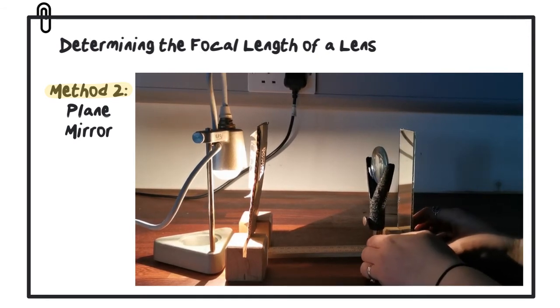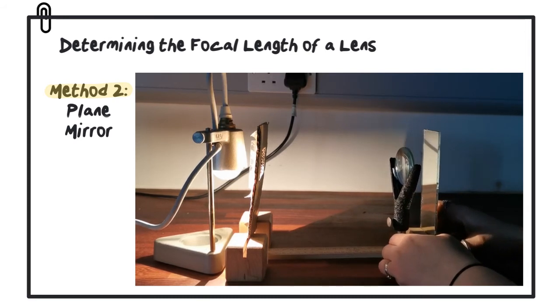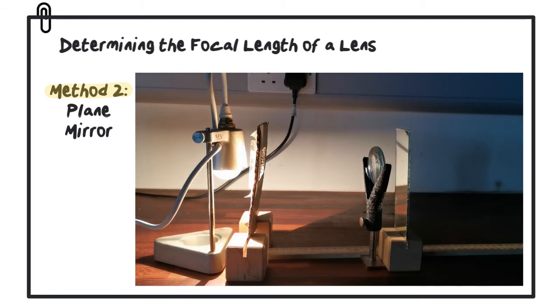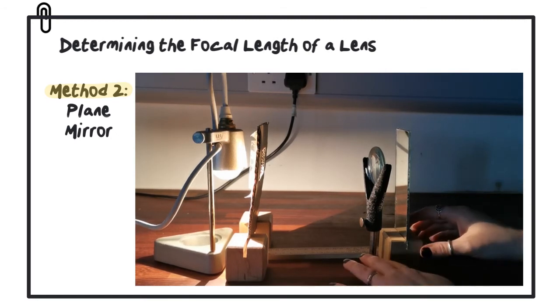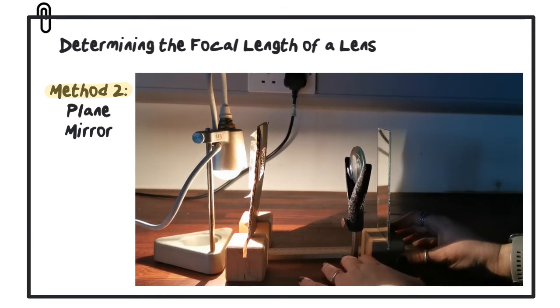We move them closer to the object and further away until we get a focused image of the object occurring on the object itself. In other words, the image is being projected back onto itself.